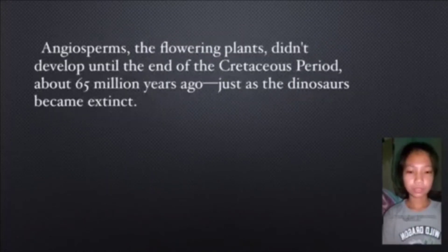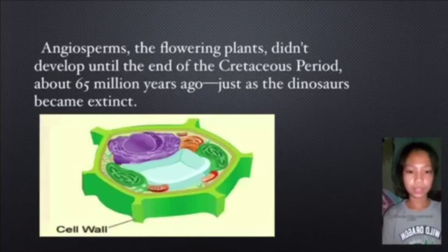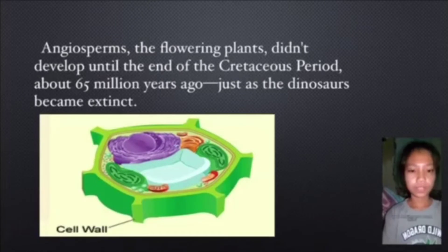Angiosperms, the flowering plants, didn't develop until the end of the Cretaceous period, about 65 million years ago, just as the dinosaurs became extinct.